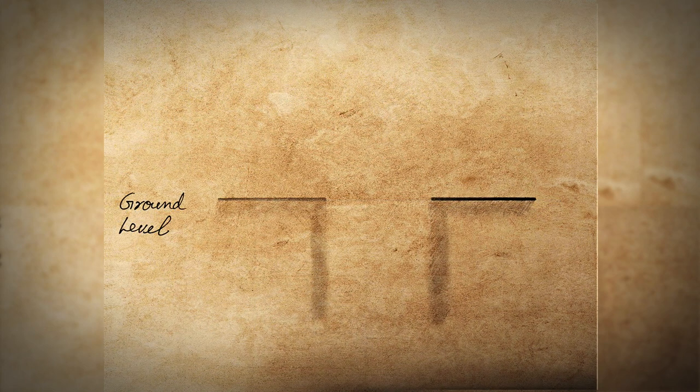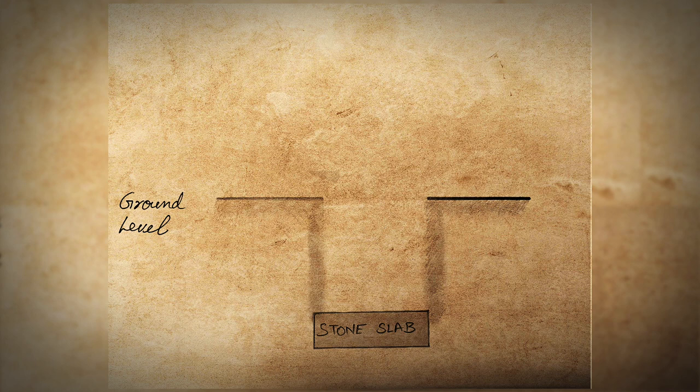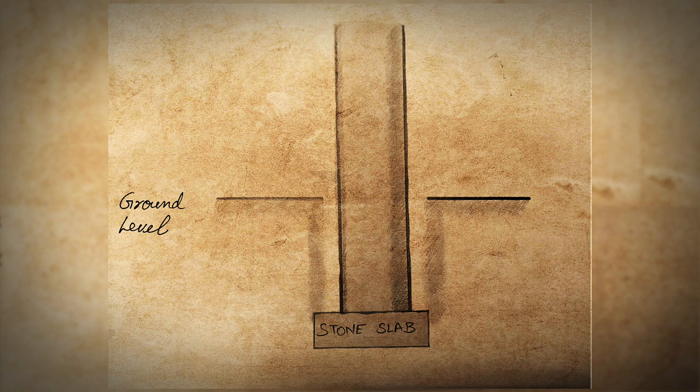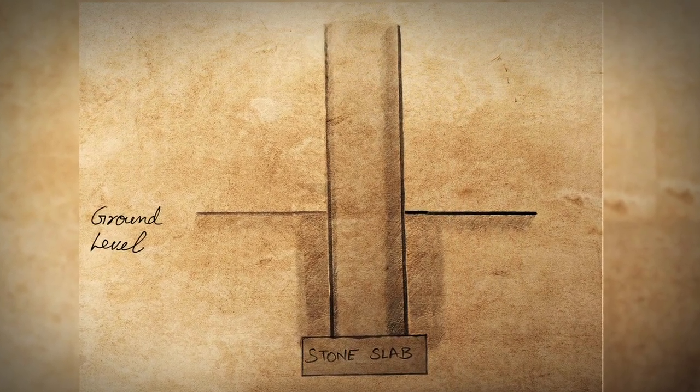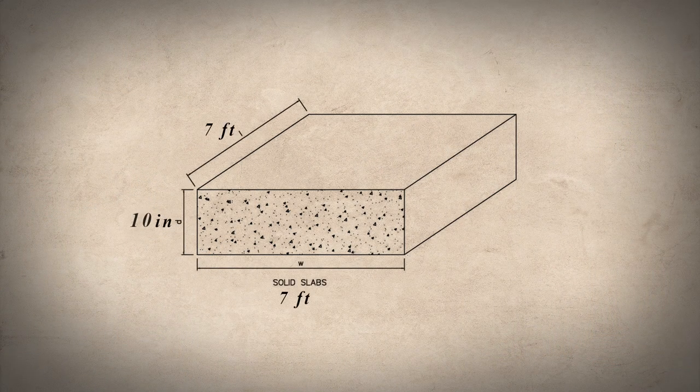The second problem with this method was that without a proper foundation, the pillar was also prone to imbalance. To solve these problems, Mauryan engineers created a new method involving a foundational stone slab. A hole was dug, a stone slab was placed at the bottom, the stone pillar was placed on this slab, and the hole was filled. This solved the sinkage problem. The stone slabs were quite large — for example, the slab found at Loryanandangad measured seven feet by seven feet and was ten inches thick.